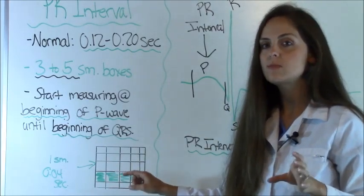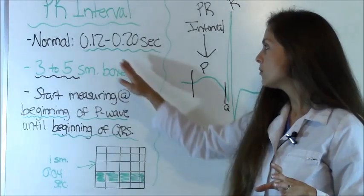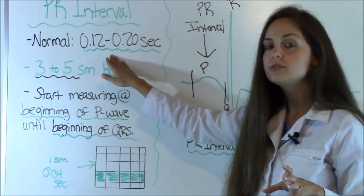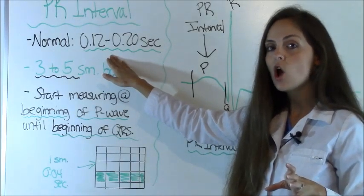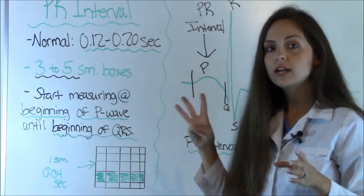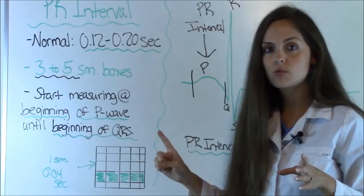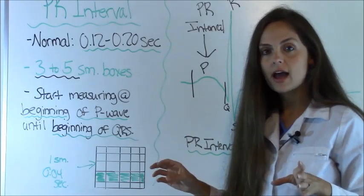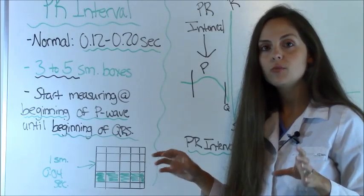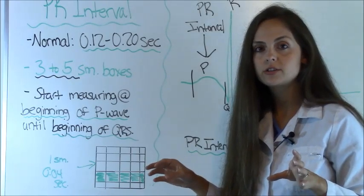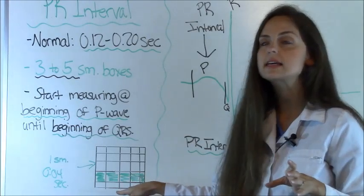You want to pay attention to the small squares. And a normal PR interval, as we said, is 0.12 to 0.20 seconds, which represents 3 to 5 small squares. So when you're measuring that, which we'll do a little bit later, you want to make sure that your PR interval measures within 3 to 5 small squares like this.